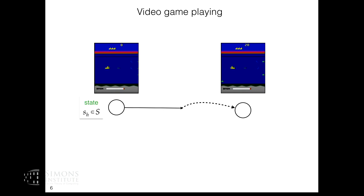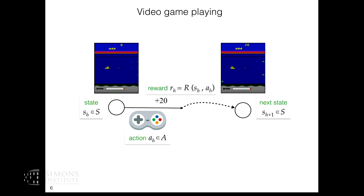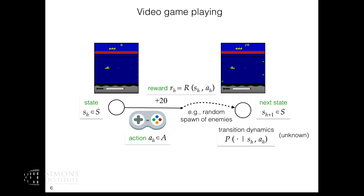As a visual example, think of game playing where you get states that are pixel images — though not strictly Markovian — your actions are control signals sent to the game, and immediate rewards are the game points you get at each time step. You transition to the next state, which is the next game screen; that transition can be stochastic due to random game mechanisms. You want to learn a policy that tells you which button to press given the current game screen.